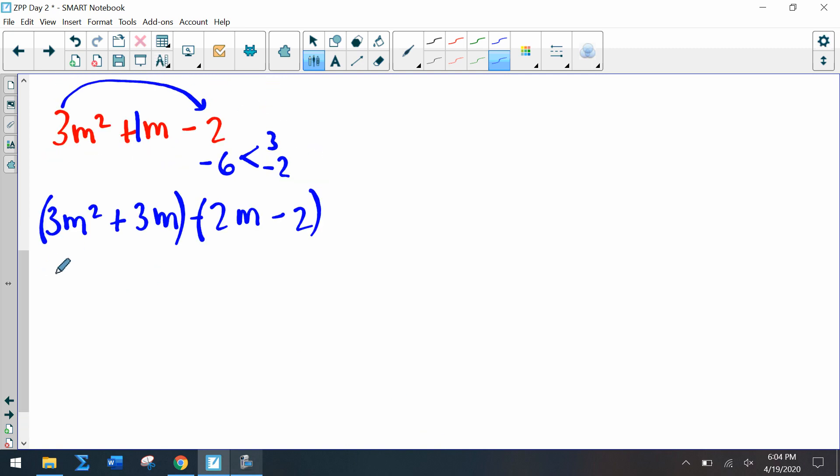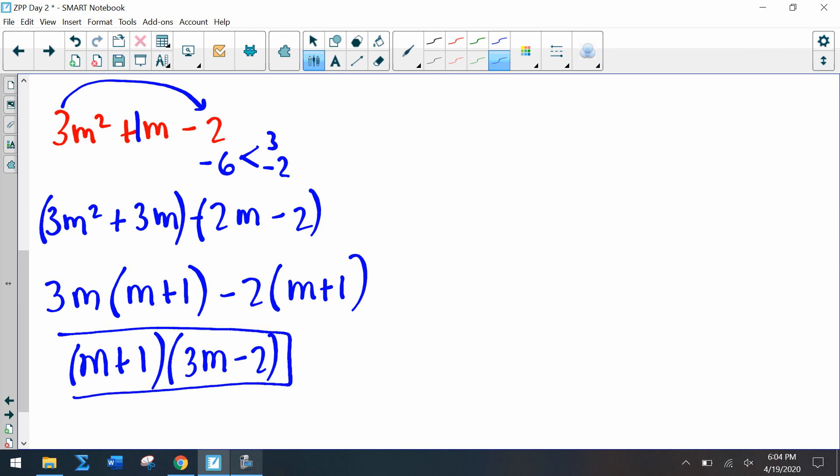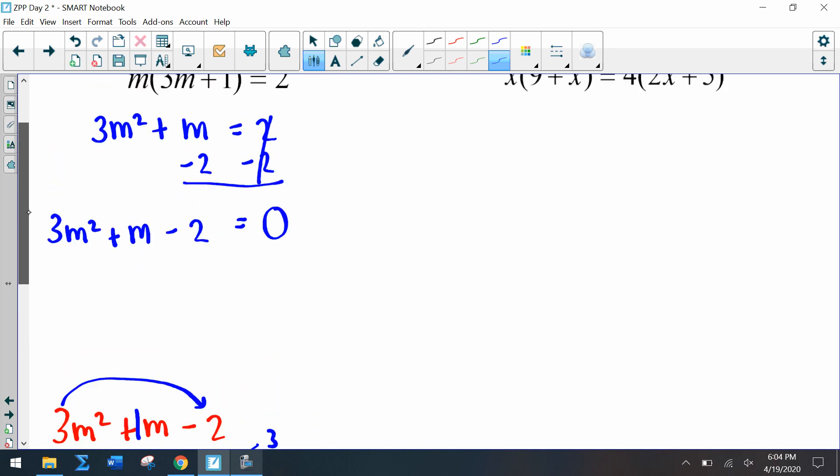So now we have 3m² + 3m - 2m - 2. So now if we group, what we can do is factor out our greatest common factor. Now 3m(m + 1), and then we get negative 2(m + 1). So those are the factors. I'm going to bring them back up to the top: (m + 1)(3m - 2).